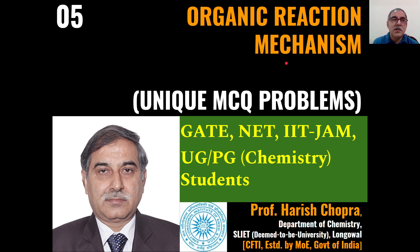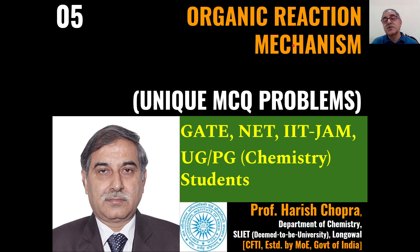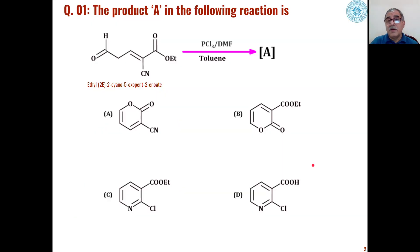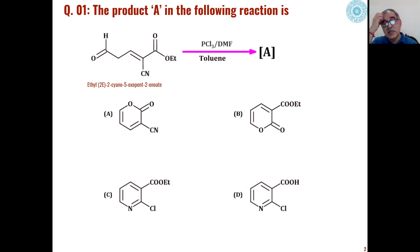Dear students, continuing with our lecture series on multiple choice questions. This is our fifth lecture in the series of solving multiple choice problems. In this lecture, we will see how under very simple reaction conditions, we can get different types of products through organic functional group transformations.